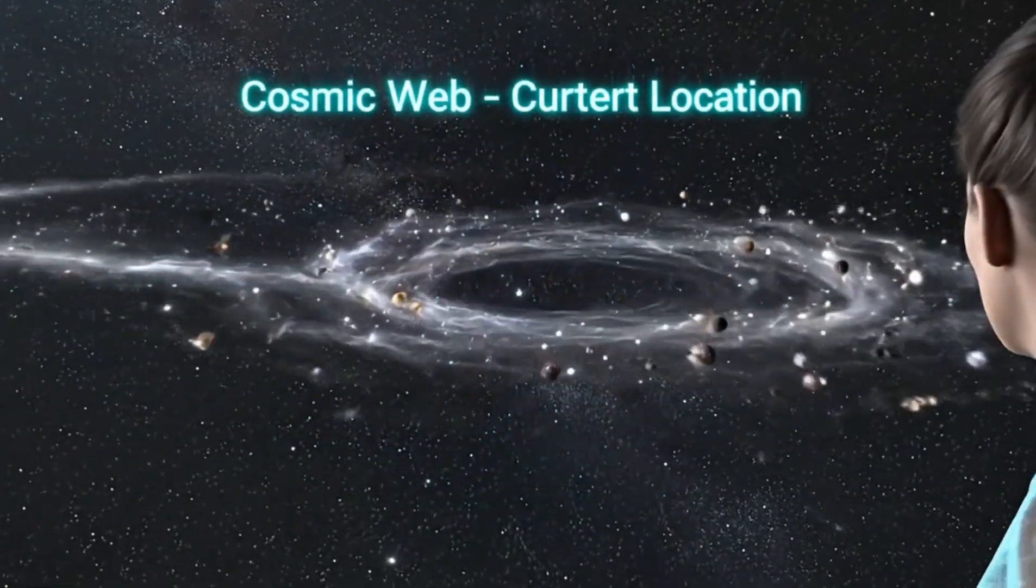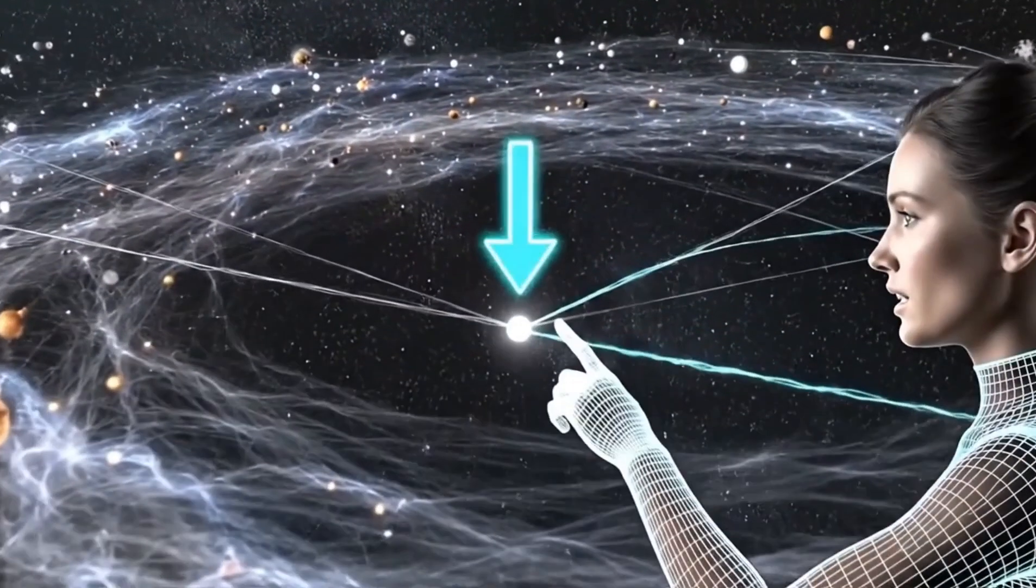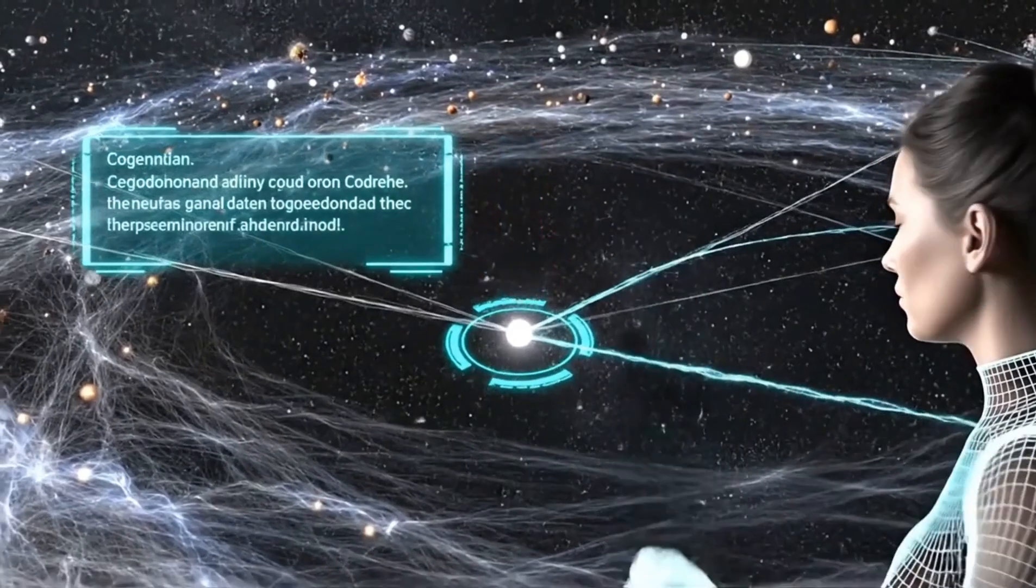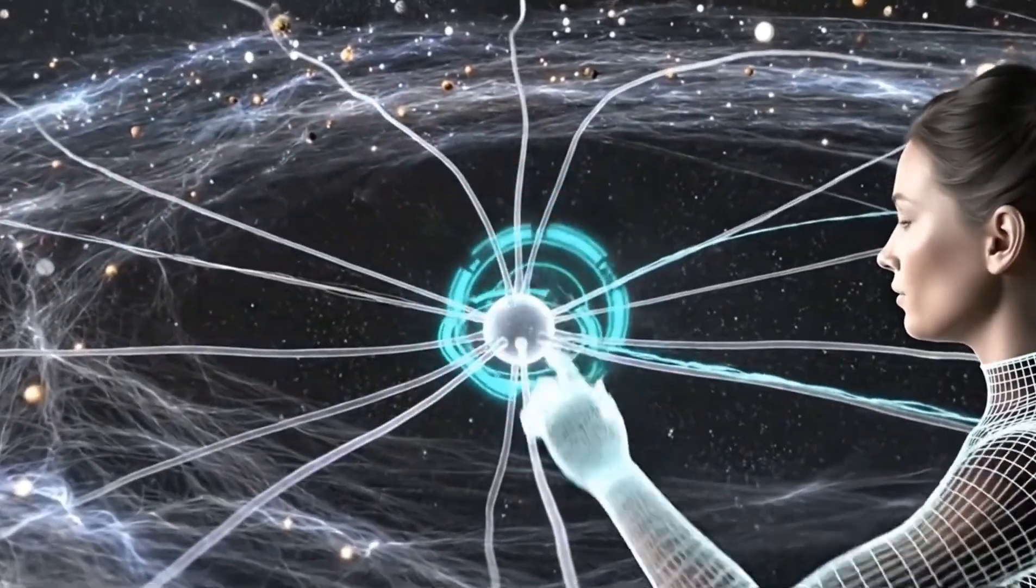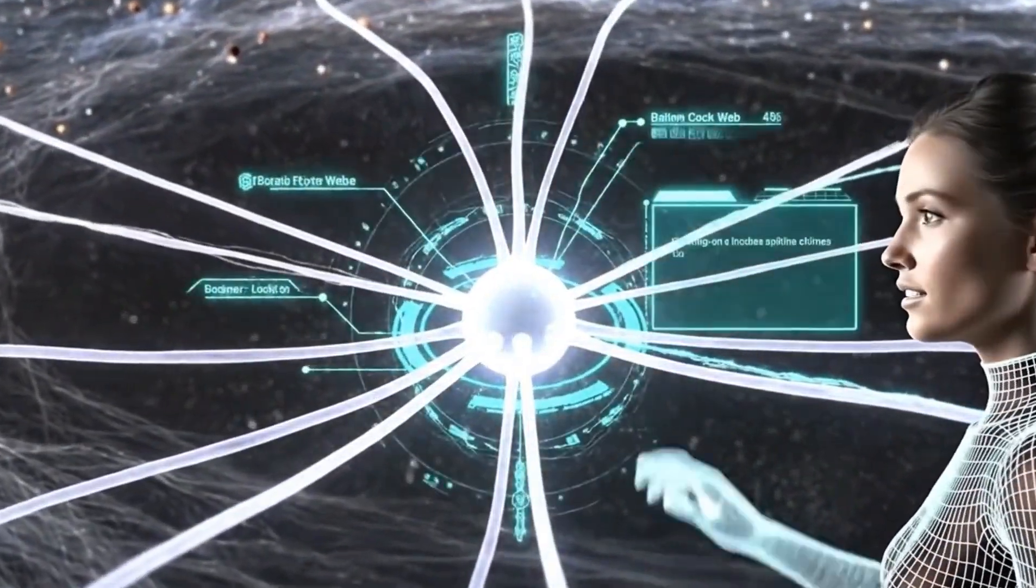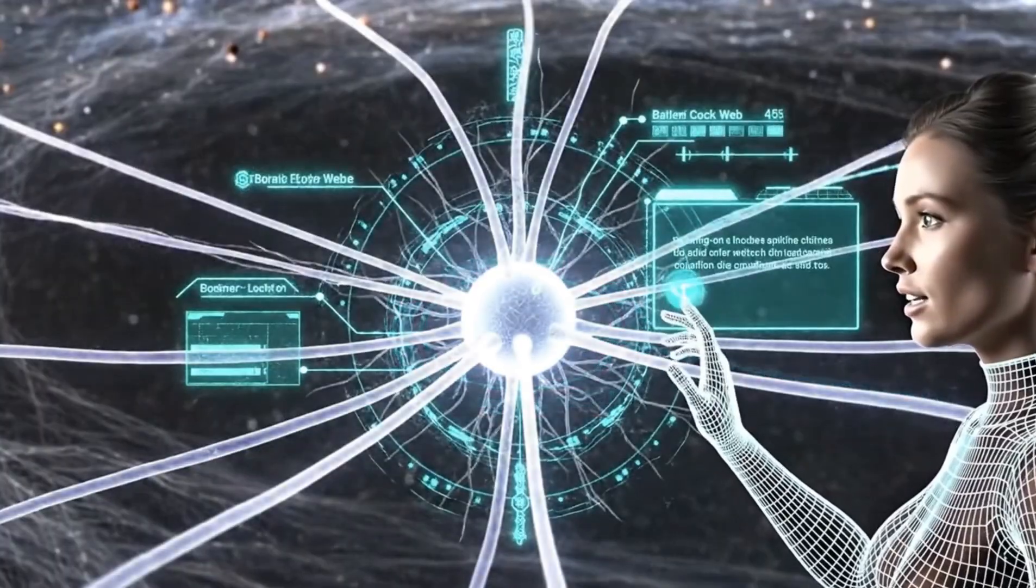Large scale structure mapped. Our galaxy cluster reduced to a single node in the cosmic web. Confirmation target. Filament junction isolated. Density peak identified at large scale intersection.